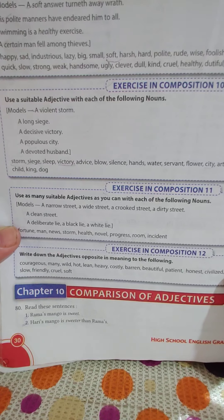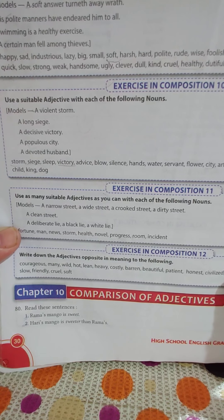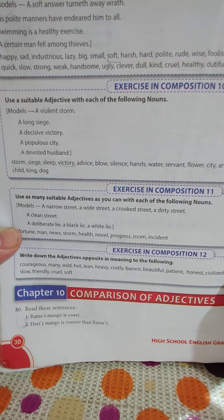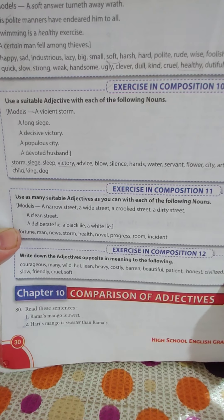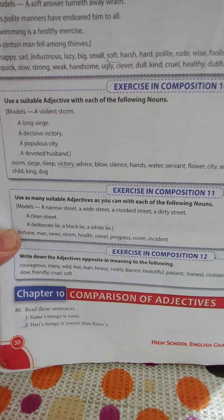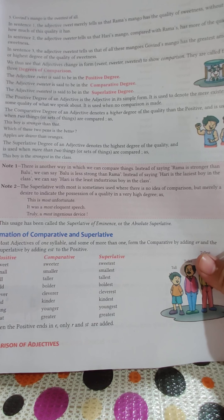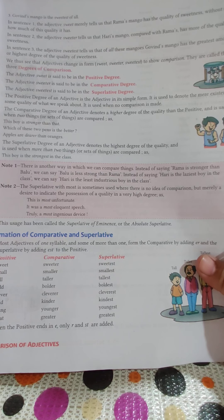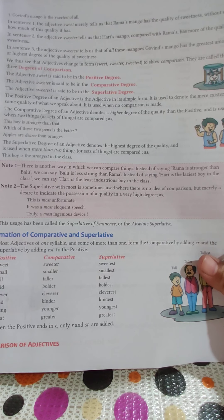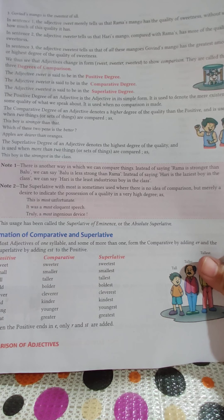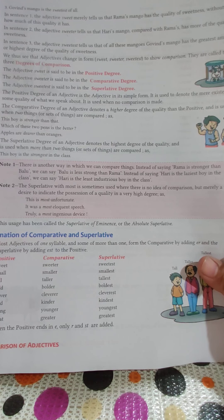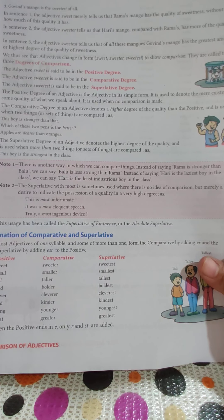Let's get started. We have two sentences here. Rama's mango is sweet — it means Rama's mango is sweet. Now, Hari's mango is sweeter than Rama's mango. And the third sentence is: Govan's mango is the sweetest of all.